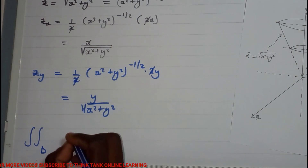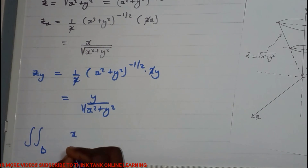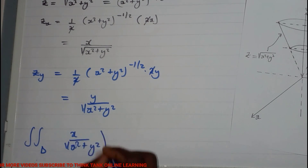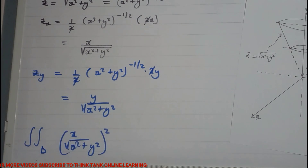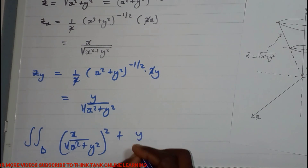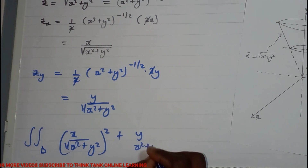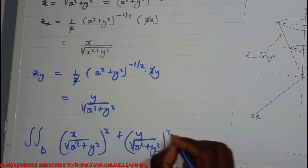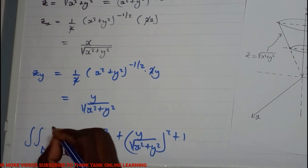So we take the double integral and square each partial derivative. We get [x / √(x² + y²)]² plus [y / √(x² + y²)]², which gives x² / (x² + y²) plus y² / (x² + y²).